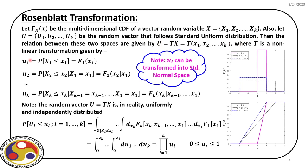The relation between the two spaces is given by U equal to capital T of X. This capital T is a non-linear transformation. U1 will be capital F1 of X1, which as per the definition of probability is capital P that X1 is less than or equal to small x1.